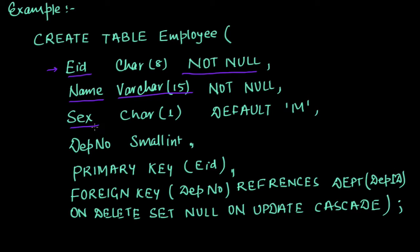For Sex we have default value as 'M'. If for a record we are not specifying what is the Sex, it will automatically set 'M' as the Sex value.